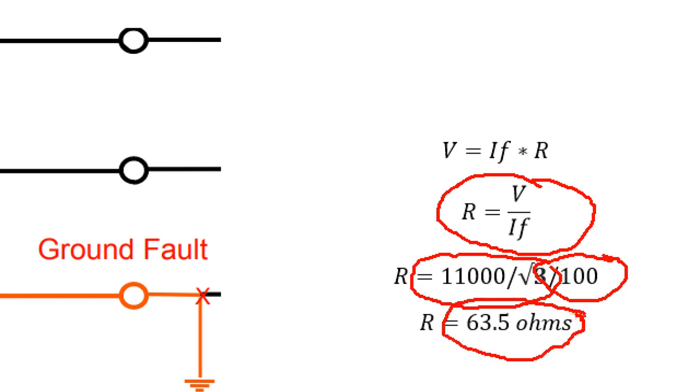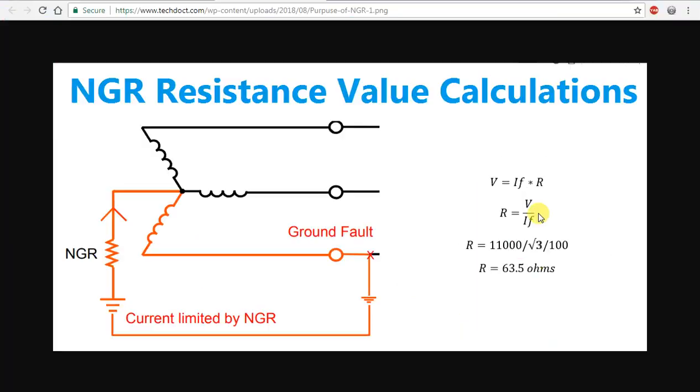This is the value of 63.5 ohms for single phase. So we calculate the resistance value as V, the phase voltage, divided by the fault current.